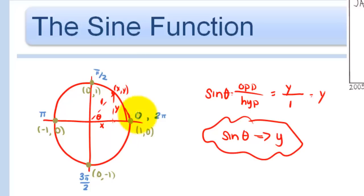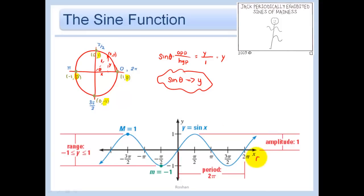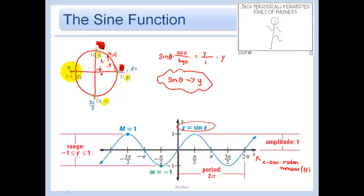Because of that, when I go to graph the sine function I'm just looking at the y-coordinates. On the x-axis I'm plotting radian measures (theta), and on the y-axis I'm plotting y equals sine theta. At 0, I plot the point (0, 0). At pi over 2, I plot the point (pi/2, 1). At pi, I plot 0. At three pi over two, I plot negative one. And then at two pi, we're back to 0.